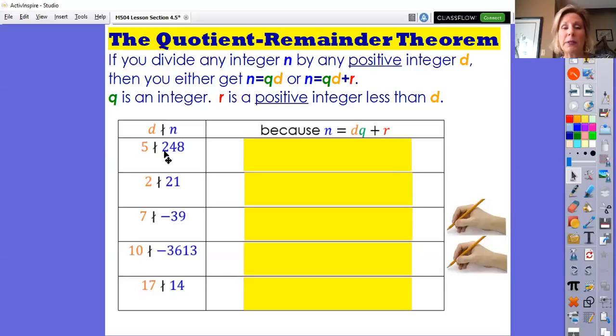The quotient remainder theorem simply says if you're going to divide any integer—remember n can be zero, positive, or negative—by positive integer d, then you'll either get n = qd where the remainder is zero (this is the case where d divides n), or you get n = qd + r (where d does not divide n). Now r is our remainder. A few things for you to know: if d does not divide n, then r will be a positive integer and it must always be less than what you're dividing by. So r will always be less than d.